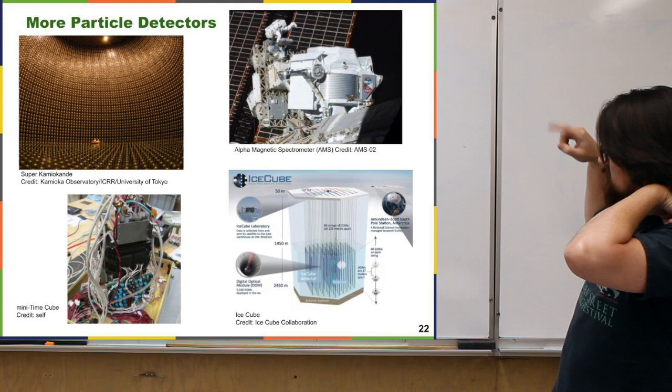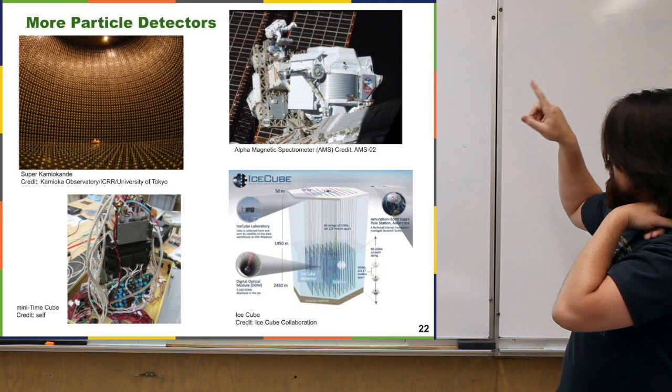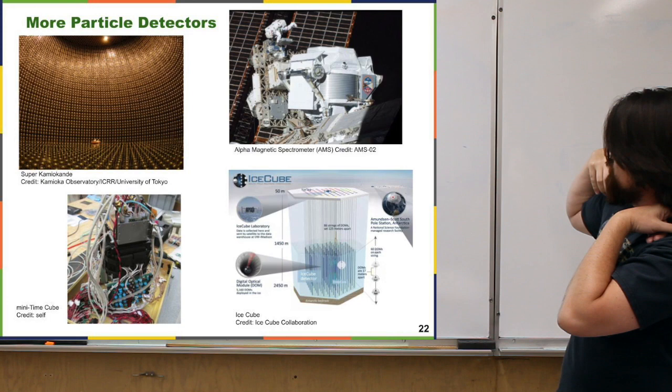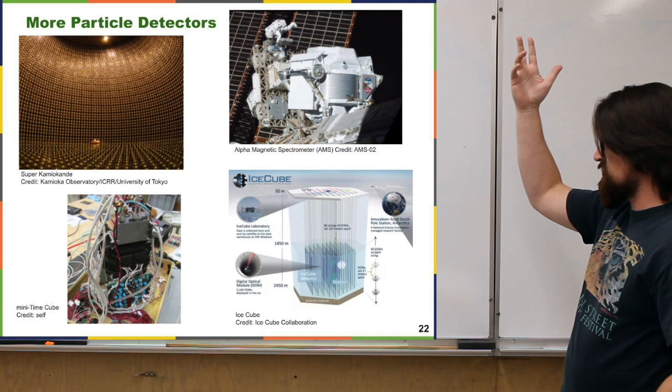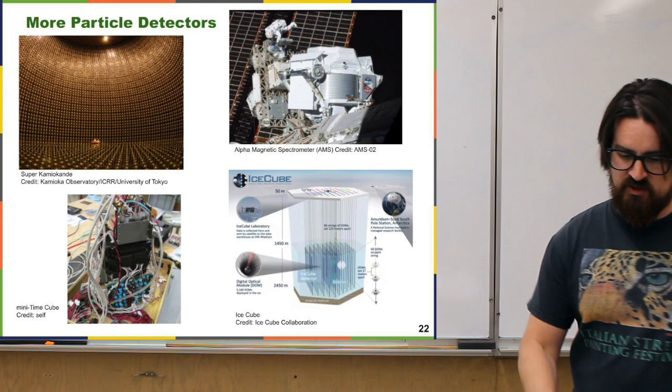The last one here is a picture of the Alpha Magnetic Spectrometer, or AMS, which is on the International Space Station. You can see the astronauts floating around doing something. AMS is that kind of cylindrical object right in the middle of the picture. It's just looking at radiation coming from all over, kind of down towards the Earth, and it has all kinds of detectors in there to see what's going on with that radiation. So those are other kinds of particle detectors.